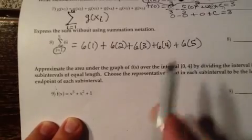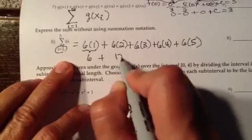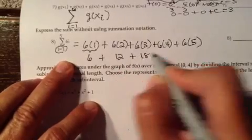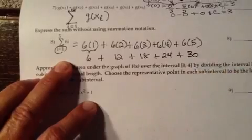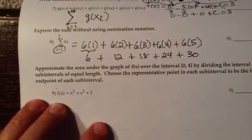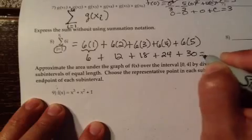So we have these five terms, and to express the sum without using summation notation, this would be the sum. We can be more specific and say this is 6 plus 12 plus 18 plus 24 plus 30.